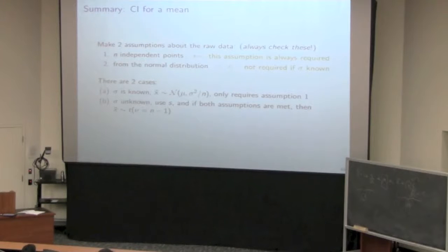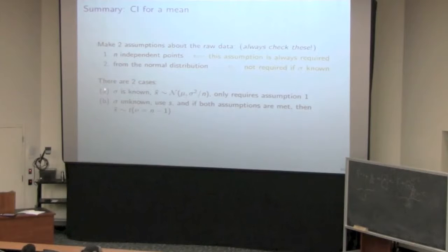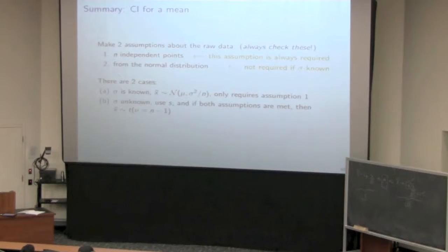So you have to assume two things: first, our data are independent — that's always required in the background. And if we don't know sigma, we have to assume our data comes from the normal distribution. If you know sigma, which is very theoretical and abstract, that's not going to be the situation. All likelihood is that sigma is estimated, so then you use S, which is our estimate. And if those assumptions hold, then X-bar follows the t-distribution.